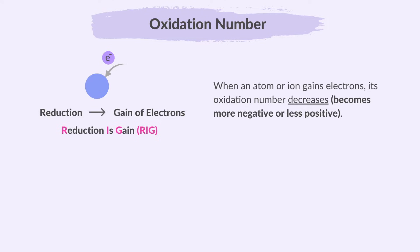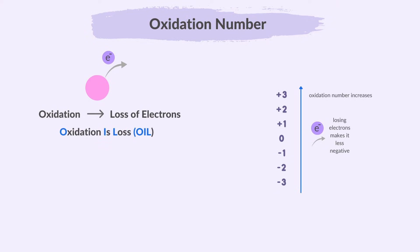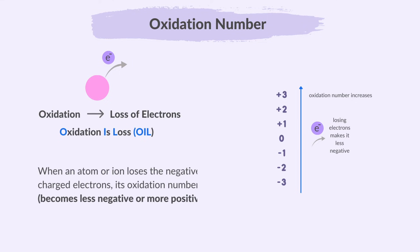This decrease is why the process is called reduction. An electron is negatively charged, so adding these negatively charged electrons to an atom increases its negative oxidation number or reduces its positive oxidation number. The same principle applies to oxidation: when an atom or ion loses the negatively charged electrons, its oxidation number increases — that is, it becomes less negative or more positive.